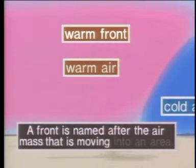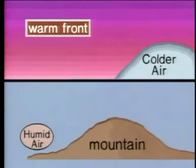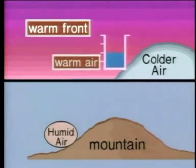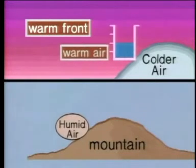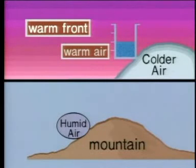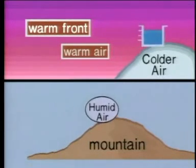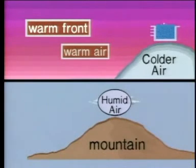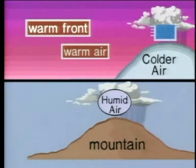A warm front works just like air moving over mountains. When warm air moves in, it is pushed up just as if it had run into an invisible mountain. The warmer air rises because it is less dense than the colder air. As the temperature goes down, the air can't hold as much water vapor — some of it condenses, clouds form, and there is rain along the front. The warm front is like an invisible mountain, but because the warm air is on the move it pushes the cold air mass, which is why the weather changes.